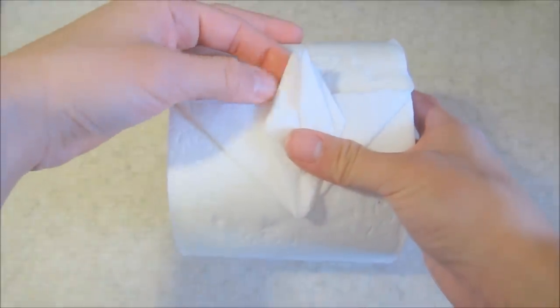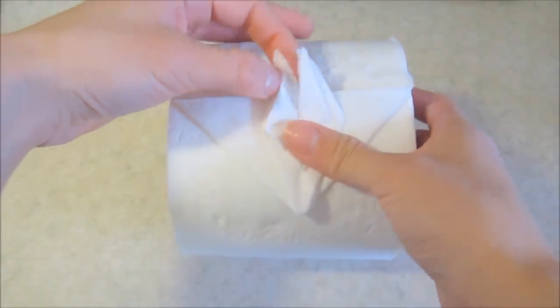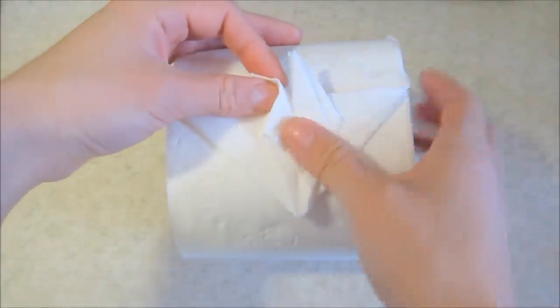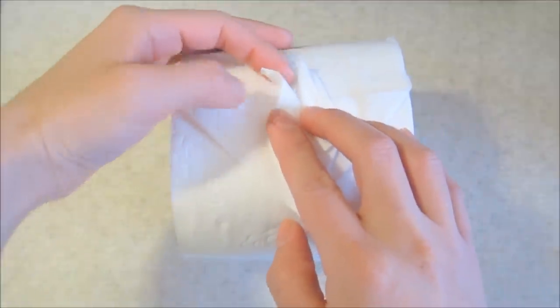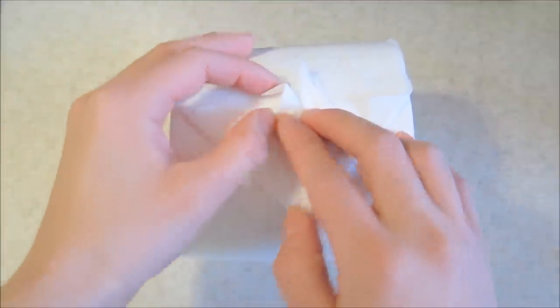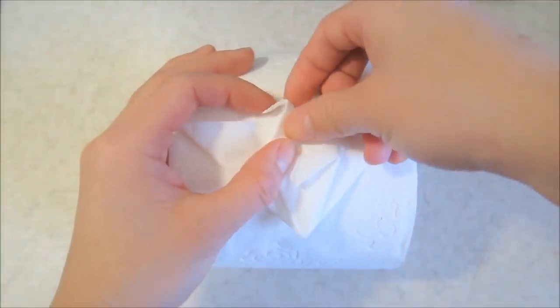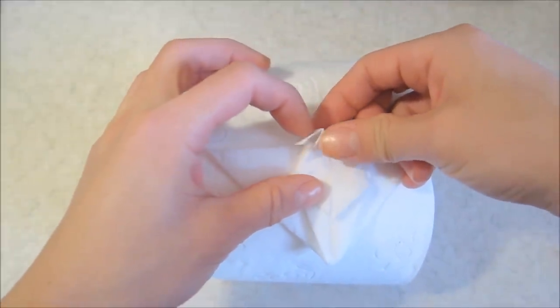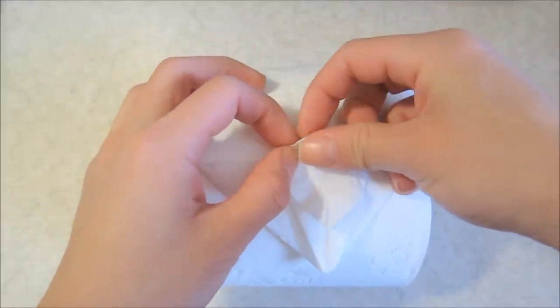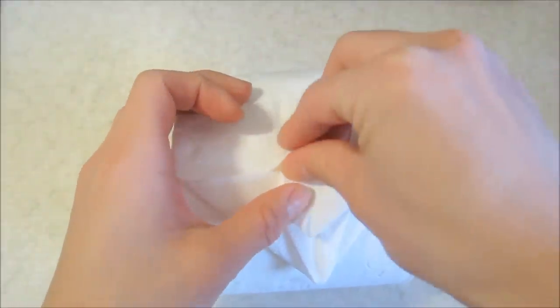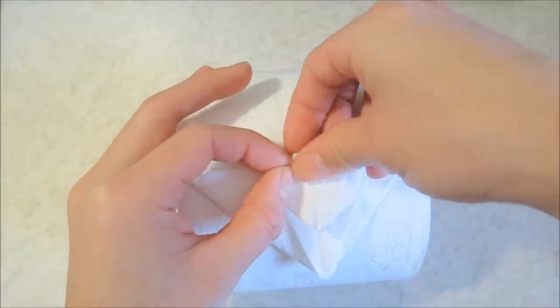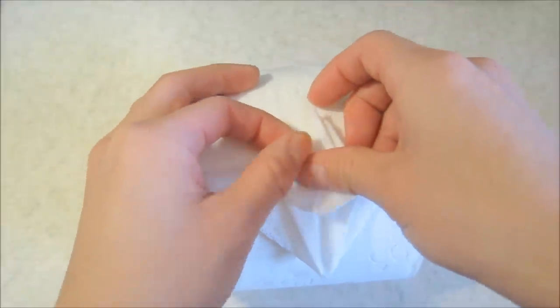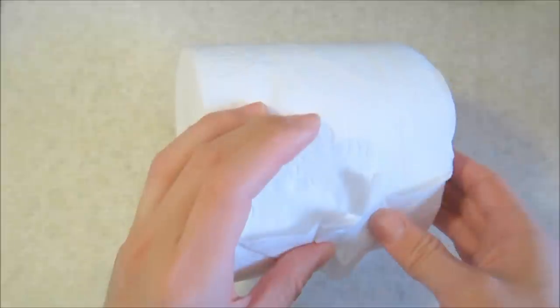Next, depending on which side you want your bird to face, take the side that you want the head to be at and fold it down. Then flatten. The head should look like this.